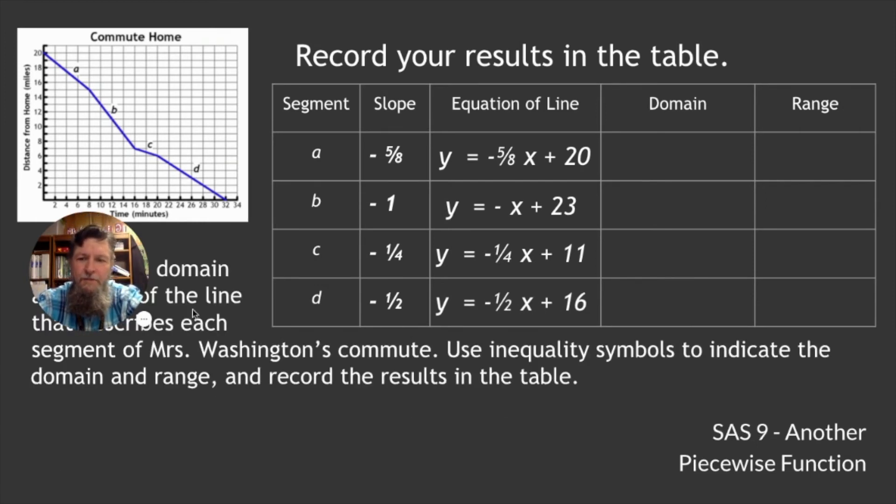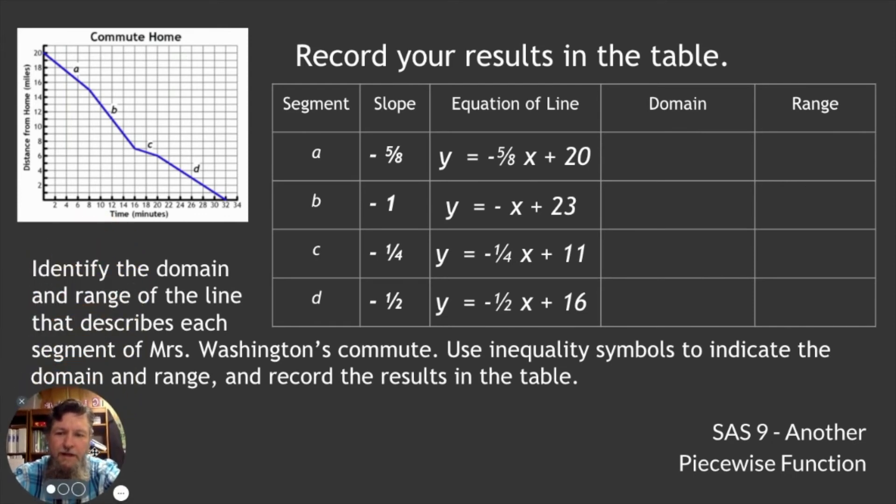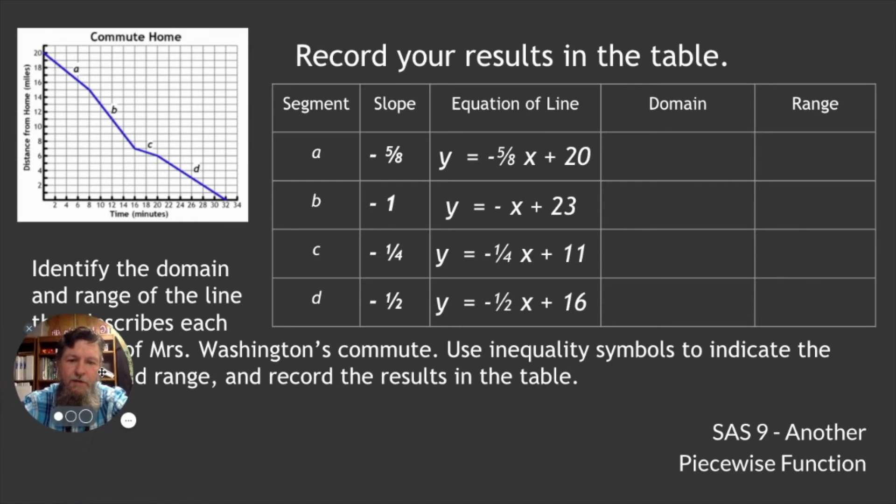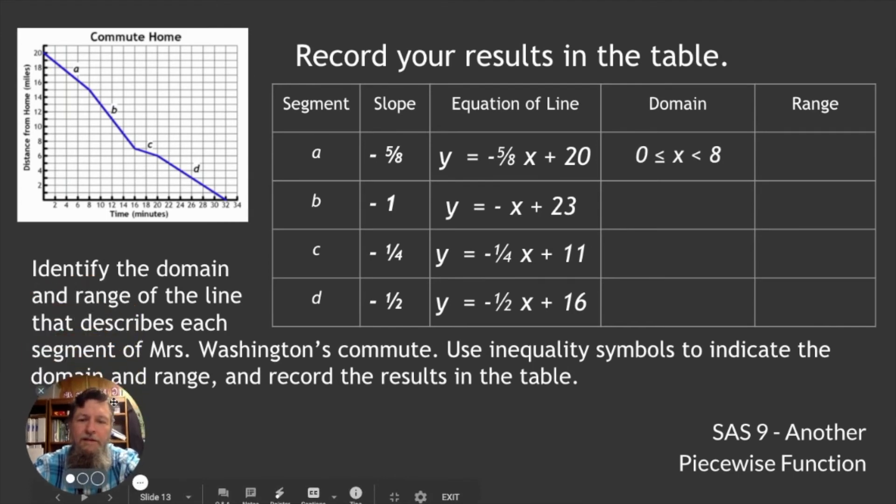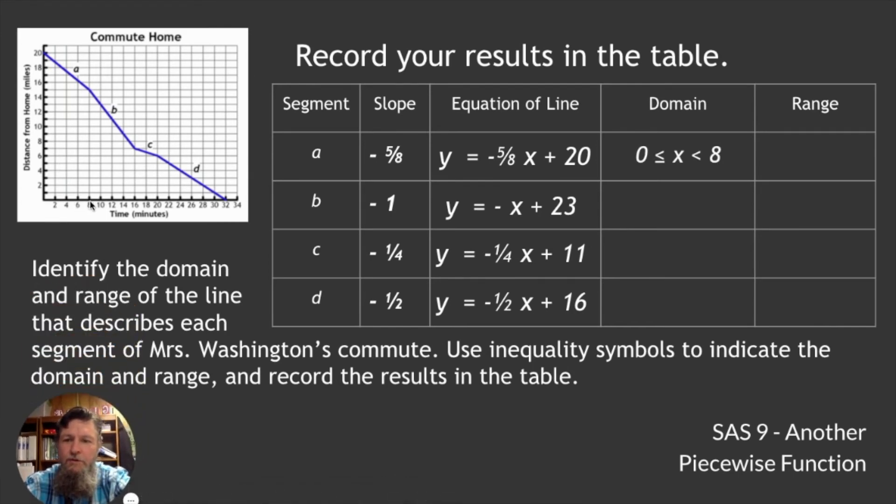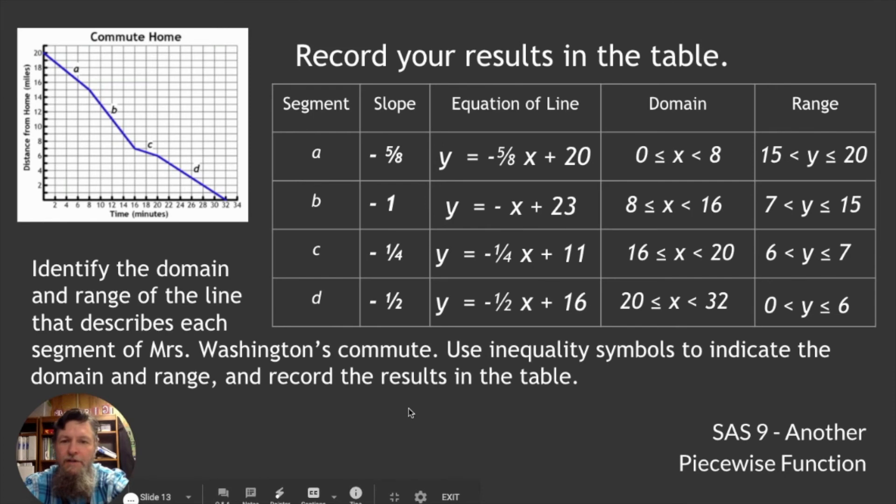And let's look at the domain and the range. Identify the domain and range of the line that is described each segment of Mrs. Washington's commute. Use inequality symbols to indicate the domain and range and record the results in the table. So, we're looking at the domain. It's from 0 to 8. So, 0 is less than or equal to X, which is less than 8. Because at 8, we're actually that far away. And the range is from 15 to 20. Notice we're using the exact right inequality symbols. It doesn't equal 8. It only goes up to 8. 8 to 16, 7 to 15, 16 to 20, 6 to 7, 20 to 32, and then 0 to 6. Those are domains and range for each part of it.